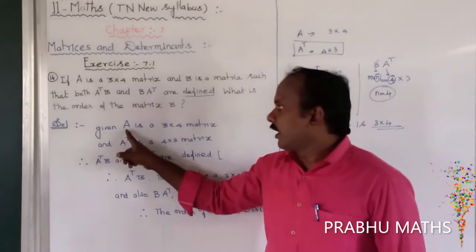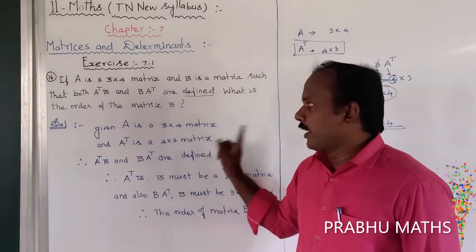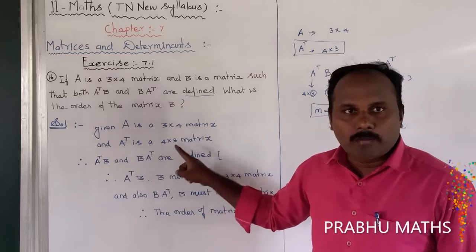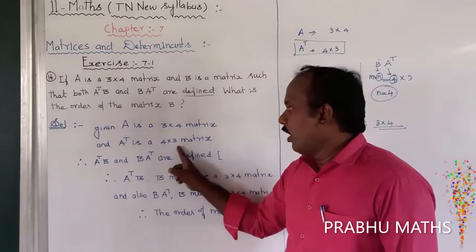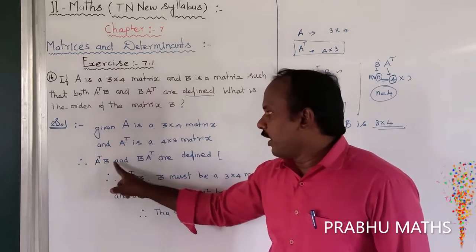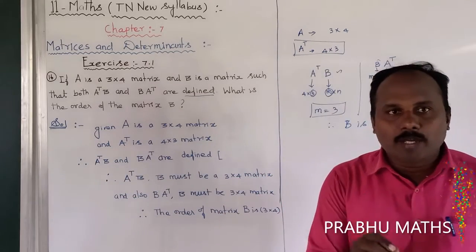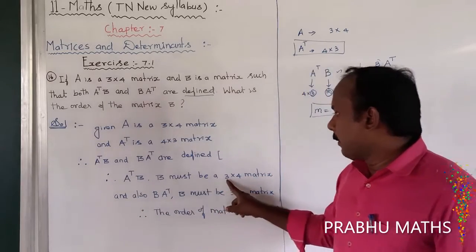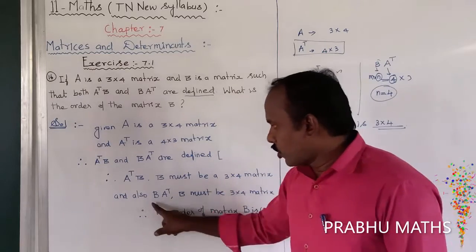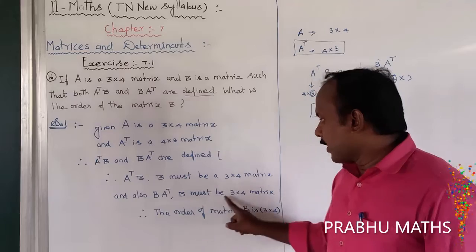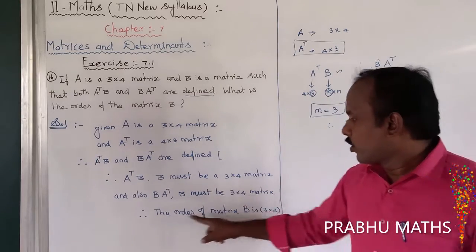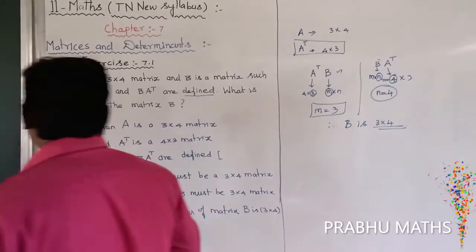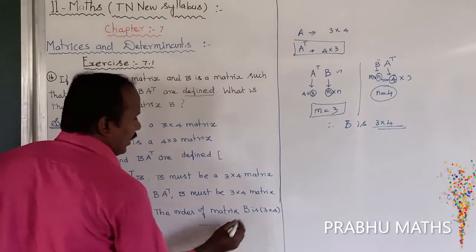In summary: the given matrix A has order 3 by 4. A transpose has order 4 by 3, because rows interchange to columns and columns interchange to rows. Since both A transpose B and B into A transpose are defined — meaning matrix multiplication is eligible — B must be a 3 by 4 matrix.